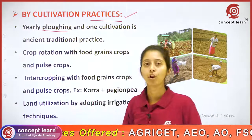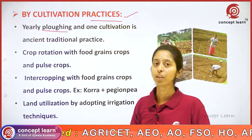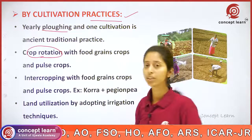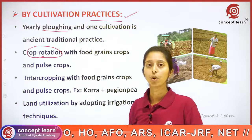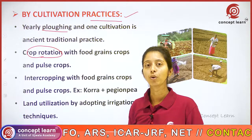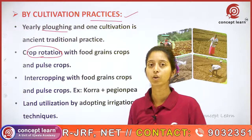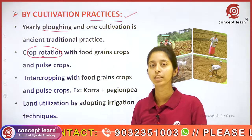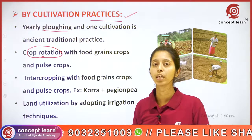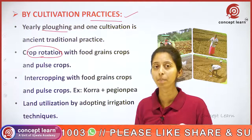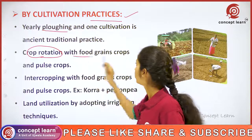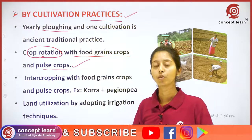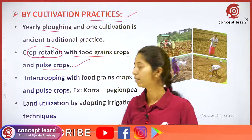One cultivation practice is yearly ploughing — by following yearly ploughing we can improve soil fertility. Another practice is crop rotation, which means rotating the crops so that every year we are not going for the same type of crop. For example, if this year we go for food grain crops, next year we will go for pulse crops. By rotating crops on the same piece of land, we can improve soil fertility.